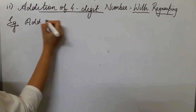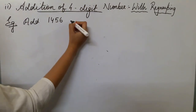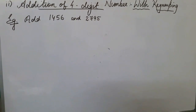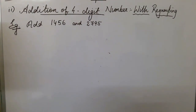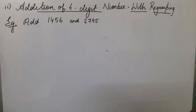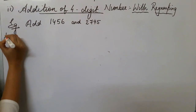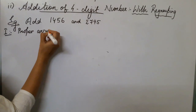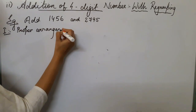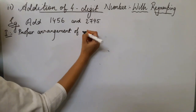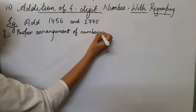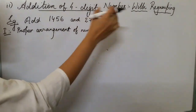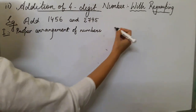Add 1,456 and 2,795. The addition follows the same steps as without regrouping. The first step is proper arrangement of the numbers in columns: ones, tens, hundreds, thousands.